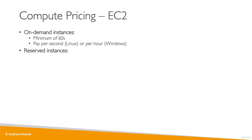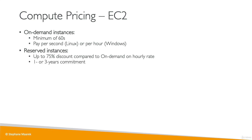If you know you're going to use your instances for a long time, you should use reserved instances, which give you up to 75% discount compared to on-demand pricing. You need to commit for one or three years, and you get more discounts if you pay early — either everything up front, partial up front, or no up front, though no up front gives a bit less discount.